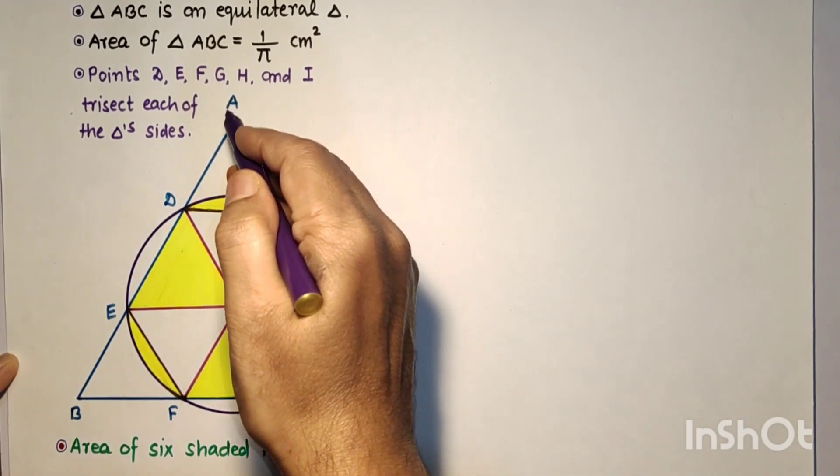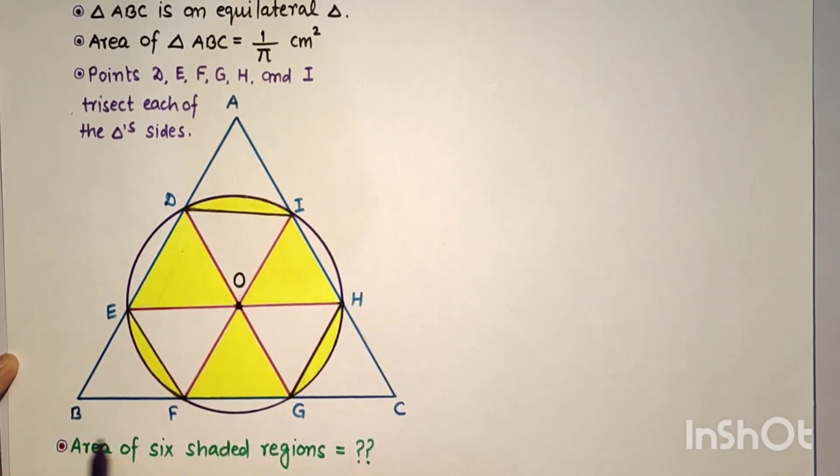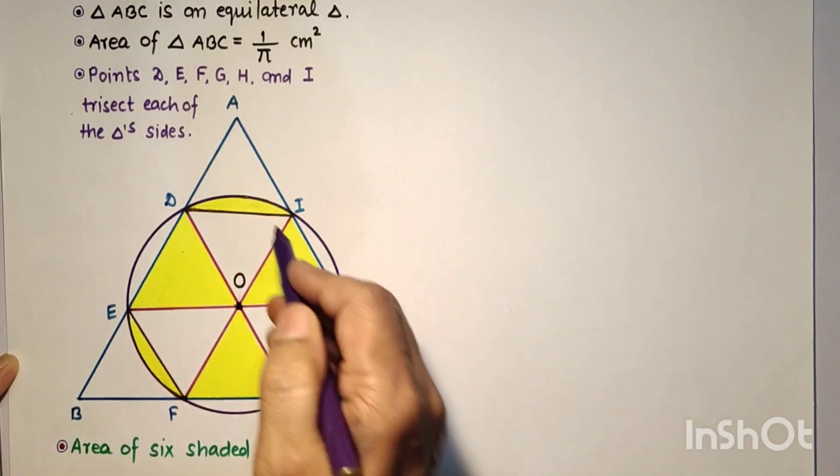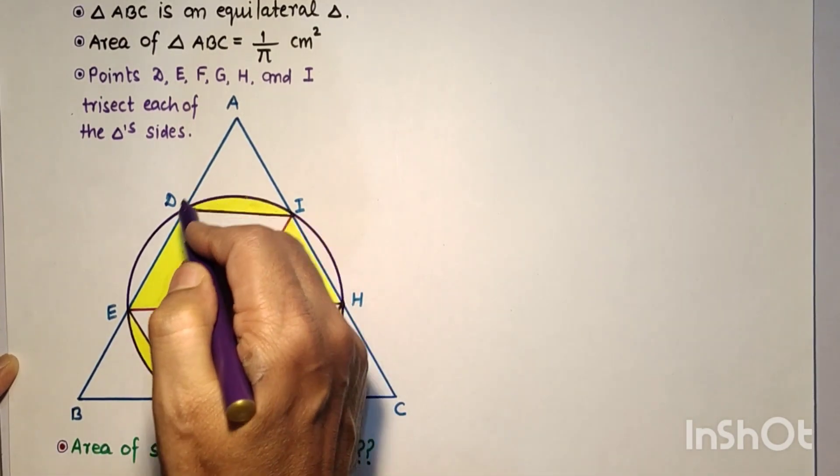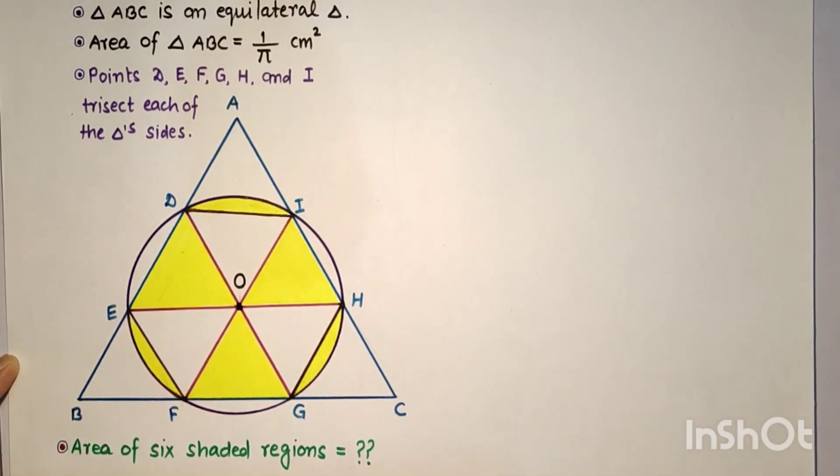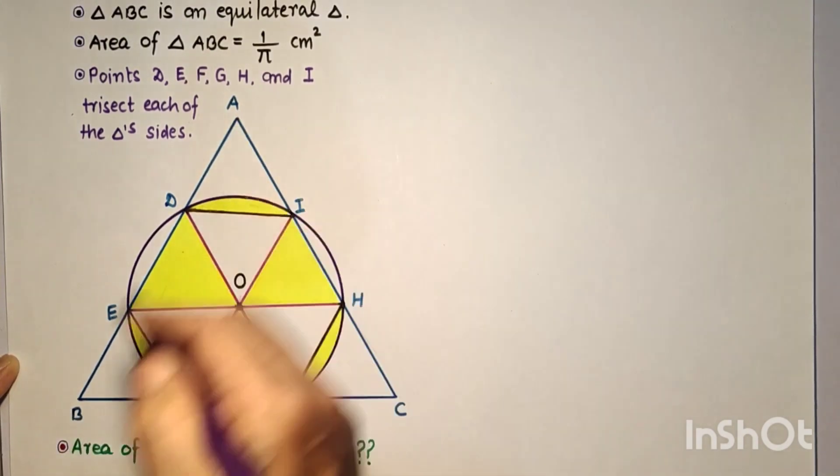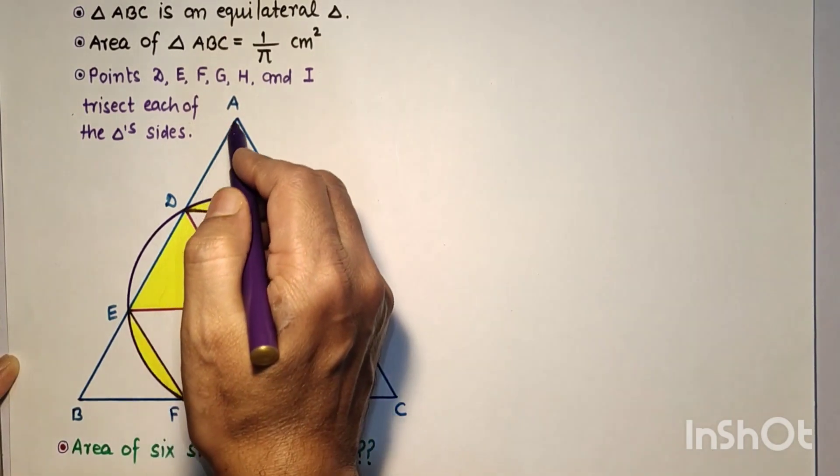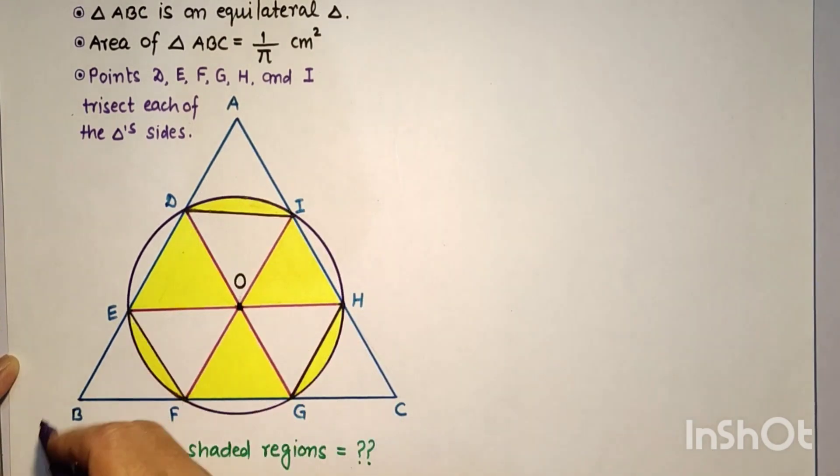The triangle is equilateral, therefore AB = BC = AC. Since these points are points of trisection, AD = DE = EB. If we consider each side as 3X,